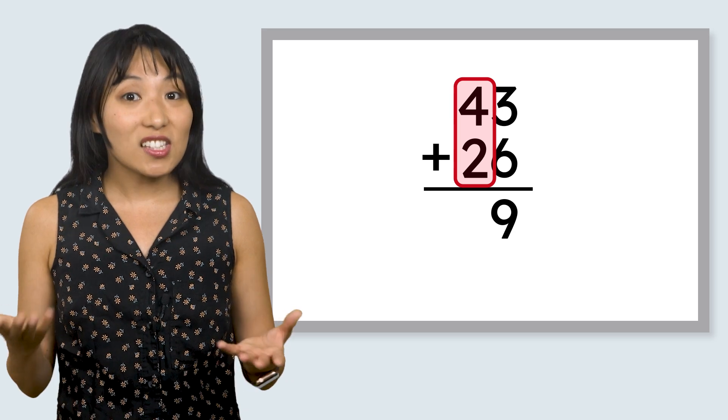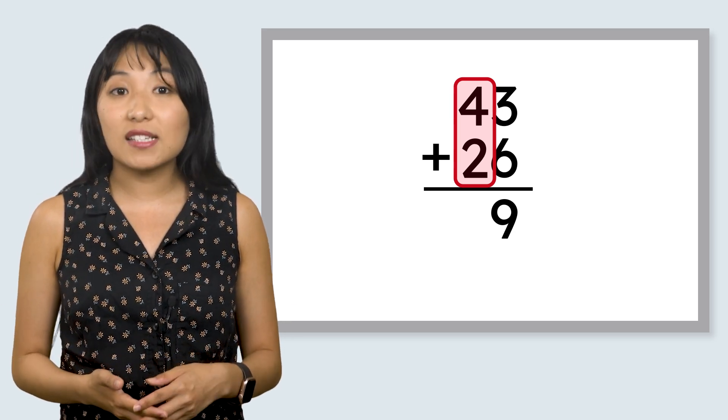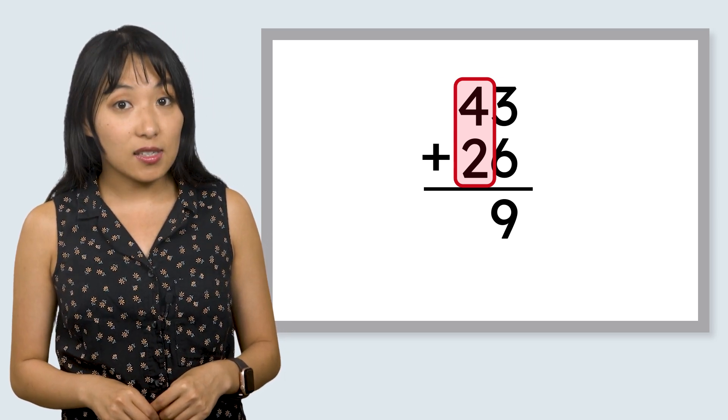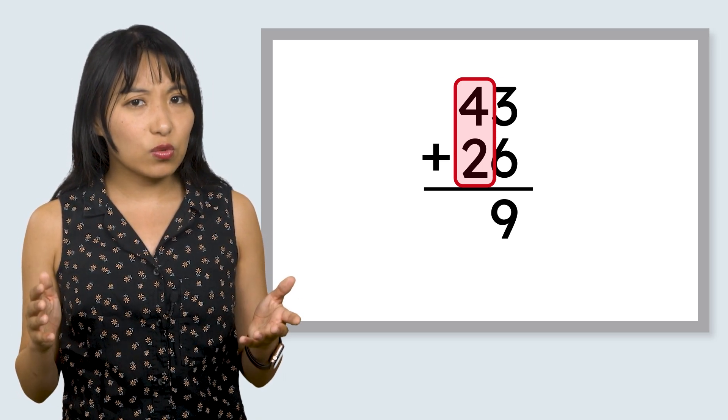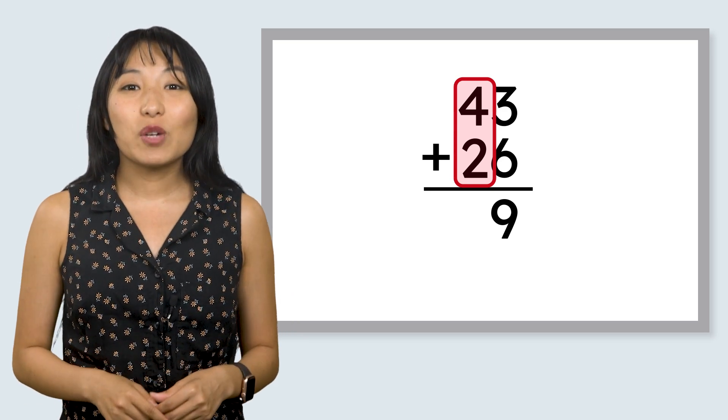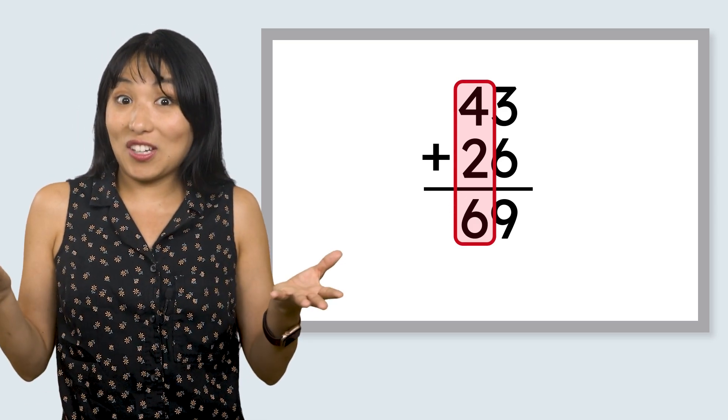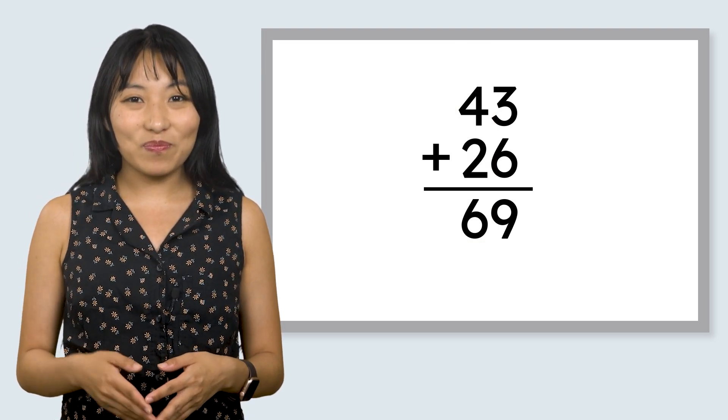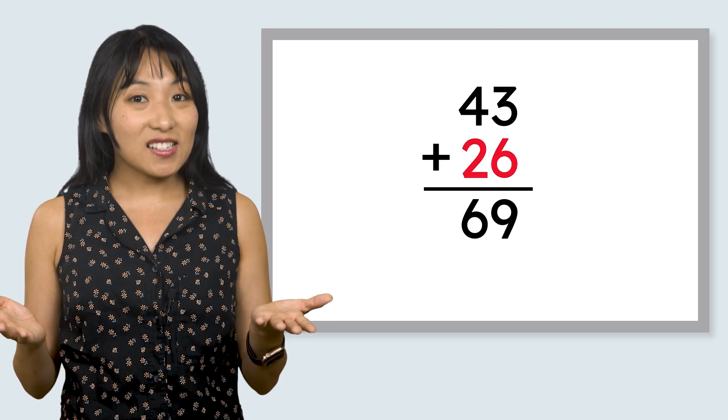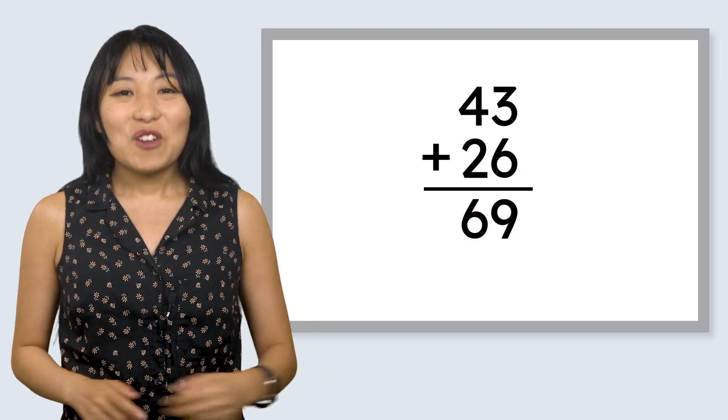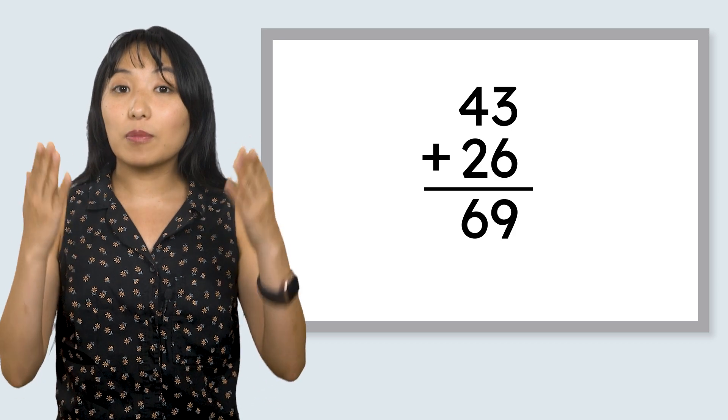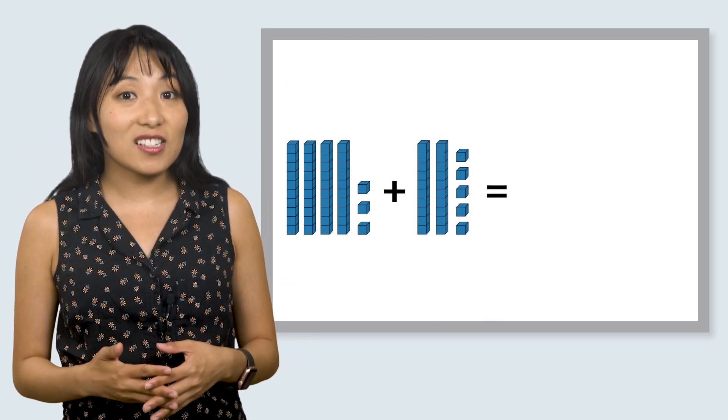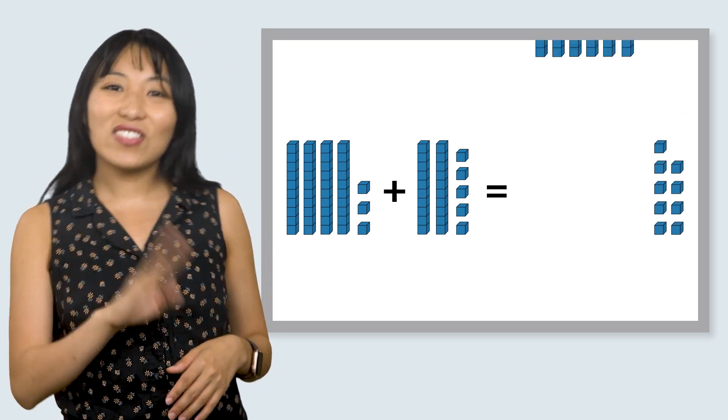Now, what do you think we do next? We need to add the tens, just like we do when we add using base 10 blocks. Starting at the top, we have four tens plus two tens. What is four plus two? Six. So we write six below the tens here. And look at that. Now we have a two digit number below our vertical addition problem. 43 plus 26 equals 69. When we add two digit numbers vertically or from top to bottom, we follow the same steps we would if we were adding with base 10 blocks. First, we add the ones and then we add the tens.